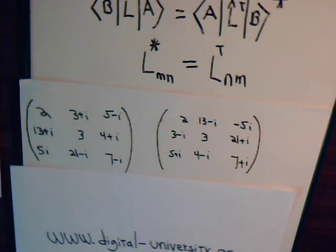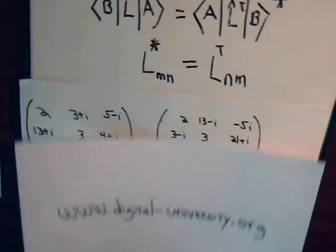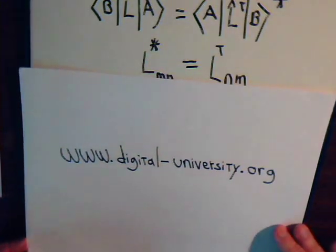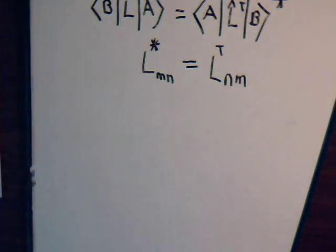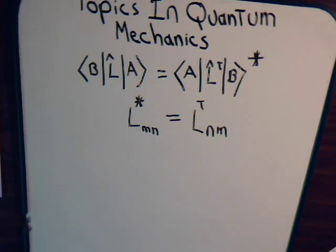So the classical adjoint is the transpose of the operator plus the complex conjugate. Now, having said all that, let's ask this question: is it possible for a linear operator to equal its own adjoint? And if that is true, what properties would the linear operator have to express in order for that to be true?